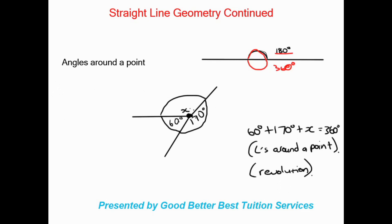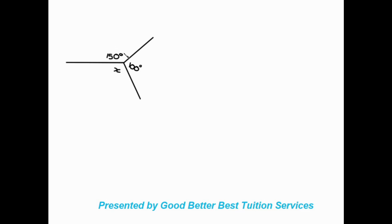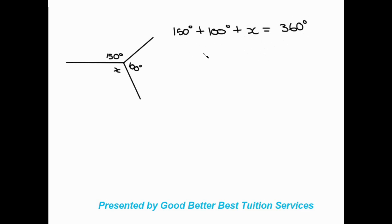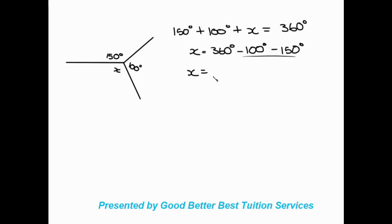So that is the new concept I want to introduce. Looking at a formal example: we have 150 degrees, 100 degrees, and they want us to find the value of x. We have our point in the middle — these are all angles around a point. So we say: 150 degrees plus 100 degrees plus x is equal to 360 degrees. Keeping x on one side, x is equal to 360 degrees minus 100 degrees minus 150 degrees, which gives us 360 degrees minus 250 degrees. We get the answer of 110 degrees.